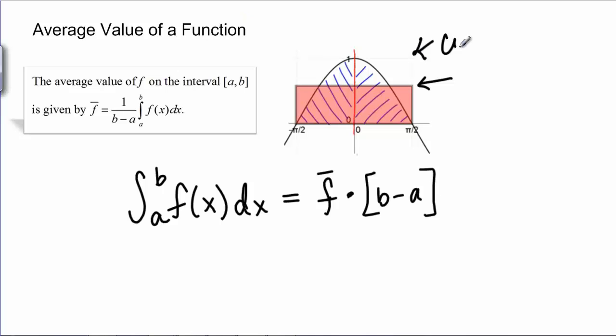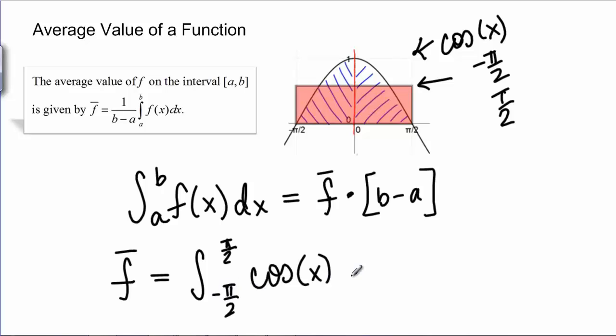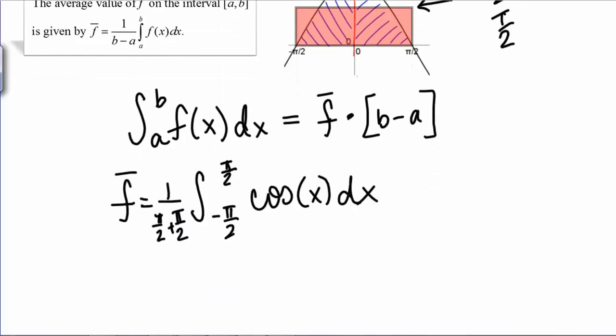So here, if we're looking at cosine of x from negative pi over 2 to pi over 2, we can find the average value of cosine of x on this region by finding the definite integral and dividing by pi over 2 minus a negative pi over 2. So simplifying, this means the average value is 1 over pi times, hey, let's use our even and odd trick. We'll say this is 2 times the integral from 0 to pi over 2 of cosine of x dx, because cosine is an even function.